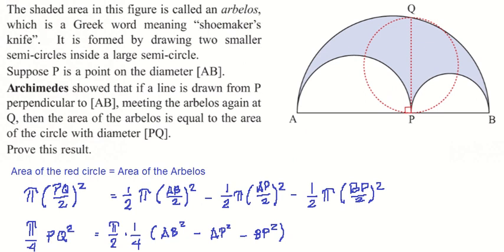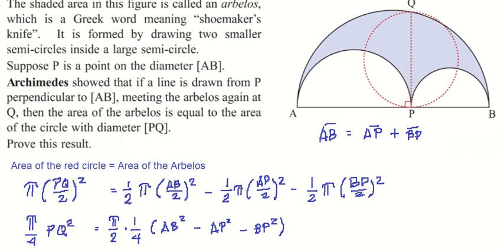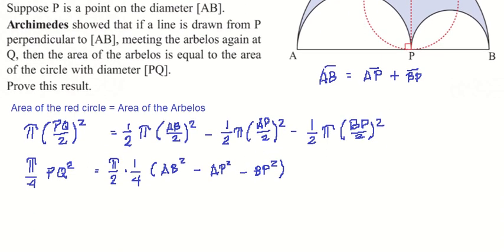I see something. So AB is equal to AP plus BP. But this is squared, squared, squared. Let me just change the color here. What if I square this?